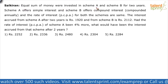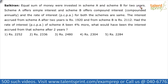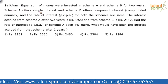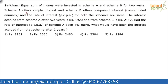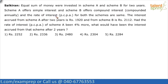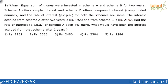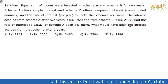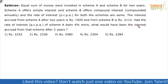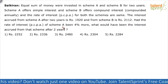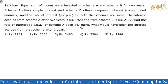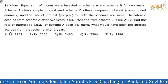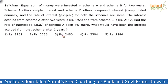Equal sums of money were invested in Scheme A and Scheme B for two years. Scheme A offers simple interest and Scheme B offers compound interest compounded annually, and the rate of interest per annum for both schemes is the same. The interest accrued from Scheme A after two years is 1920 and from Scheme B is rupees 2112. Had the rate of interest of Scheme A been four percentage more, what would have been the interest accrued from that scheme after two years?